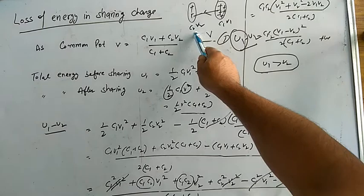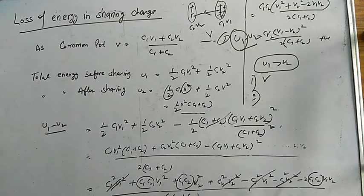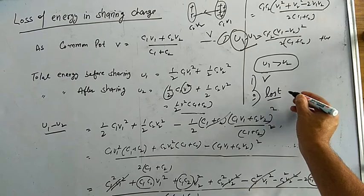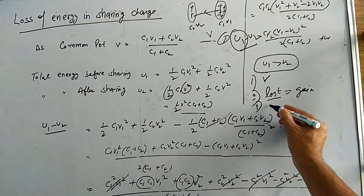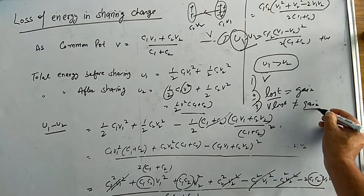To summarize: when two capacitors share charge, charge flows from higher to lower potential until both reach the same common potential. One capacitor loses charge and the other gains the same amount — charge is conserved, there is no loss of charge. However, energy is lost as heat due to the flow of charge, and this energy loss is always positive regardless of which potential is greater.